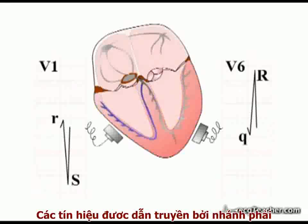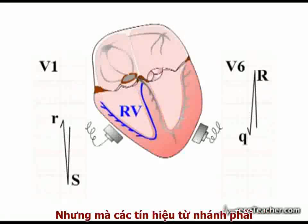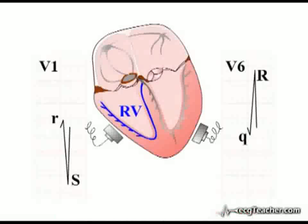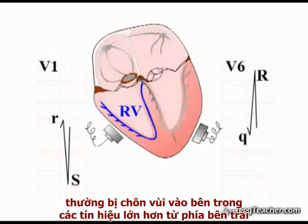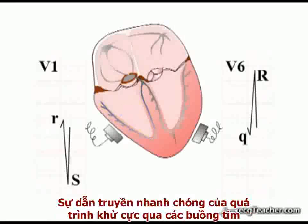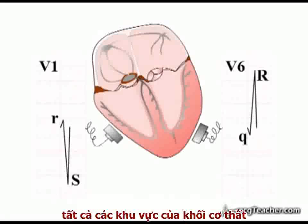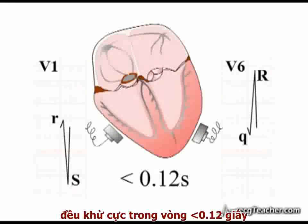Signal transmitted by the right bundle branch depolarises the right ventricle, but the signal from right ventricular depolarisation is usually buried in that generated from the larger left-sided chamber. The rapid conduction of depolarisation around the chambers by an intact conducting system means that all regions of the ventricular myocardium are depolarised within 0.12 seconds.